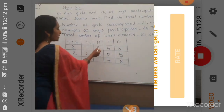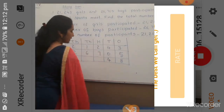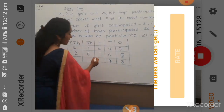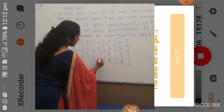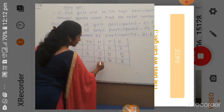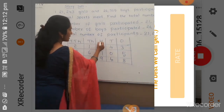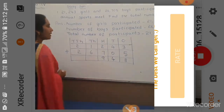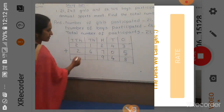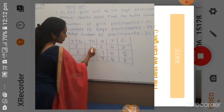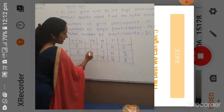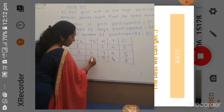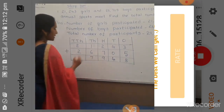Next, 2 plus 7 in the hundreds place equals 9. Then we go to the thousands place. In the thousands place we have 1 and 6. When you add 1 plus 6, that is 7.